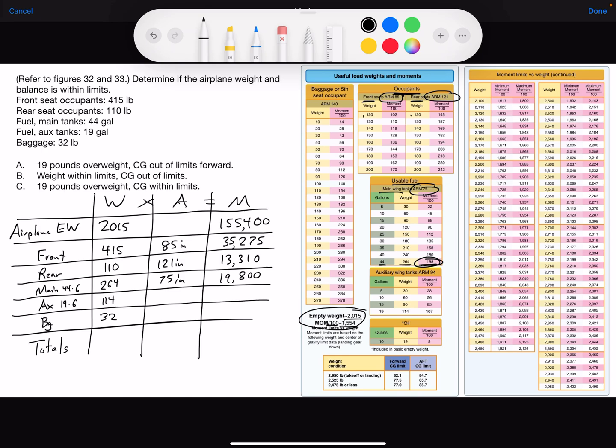Auxiliary fuel tank 114 pounds. Here's aux tank, here's the arm of 94. Multiply those together you get 10,716. Baggage 32 pounds. Here's where we find the baggage on the table, they don't have 32, so we'll multiply by the arm of 140 and that gives you a moment of 4,480.